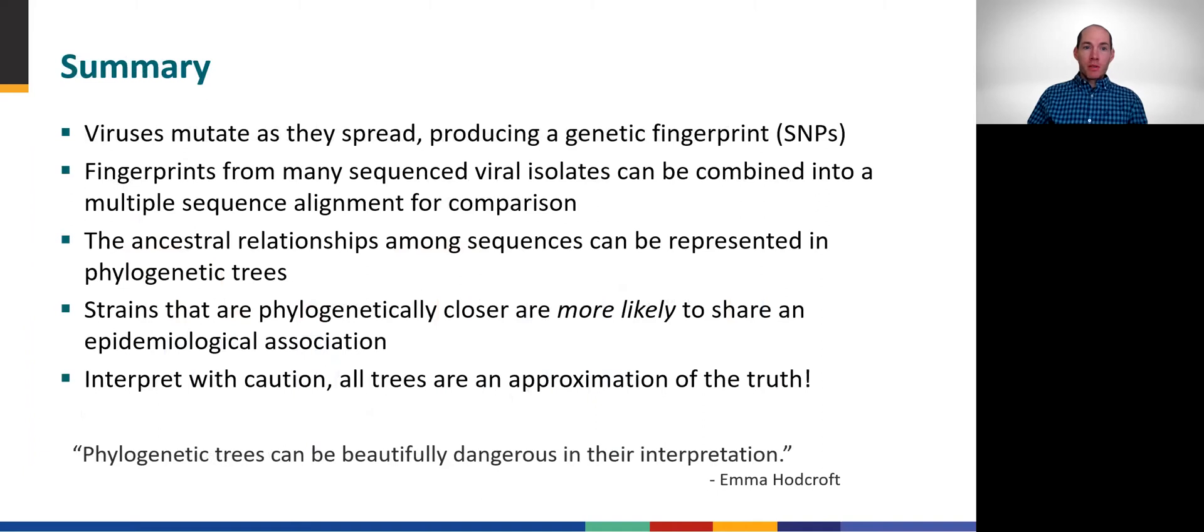To summarize, viruses mutate as they spread, producing a genetic fingerprint. Fingerprints from many sequenced viral isolates can be combined into a multiple sequence alignment, or MSA, for comparison. The ancestral relationships among sequences can be represented in phylogenetic trees, and although strains that are phylogenetically closer are more likely to share an epidemiological association, always interpret with caution, because all trees are only an approximation of the truth.